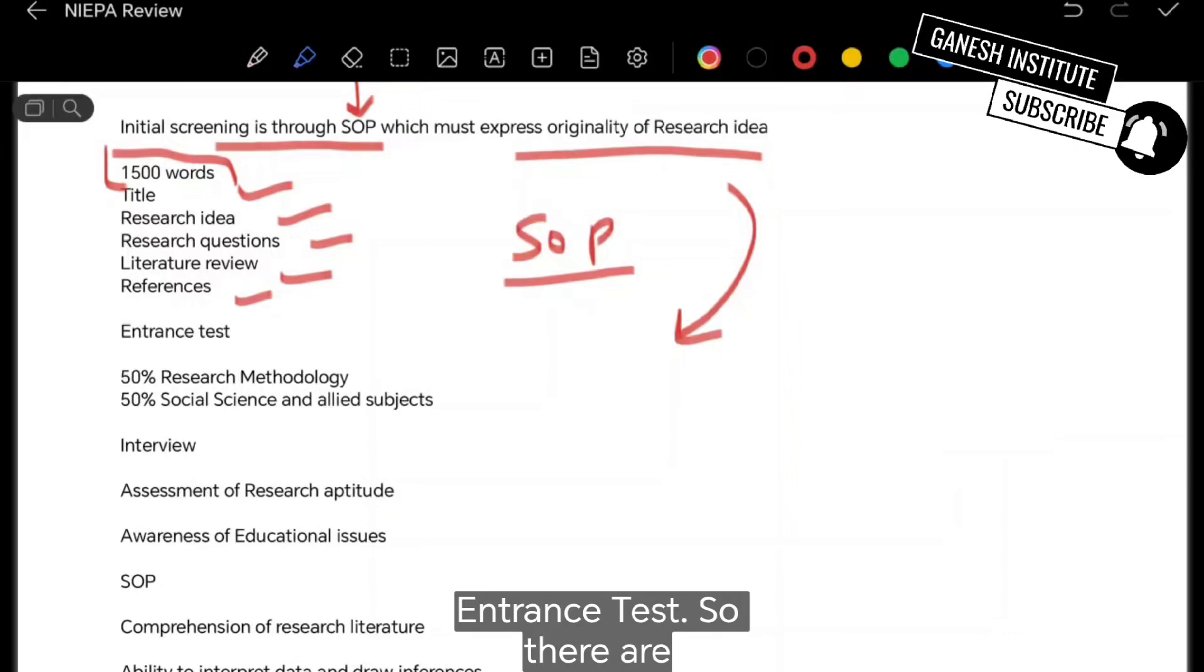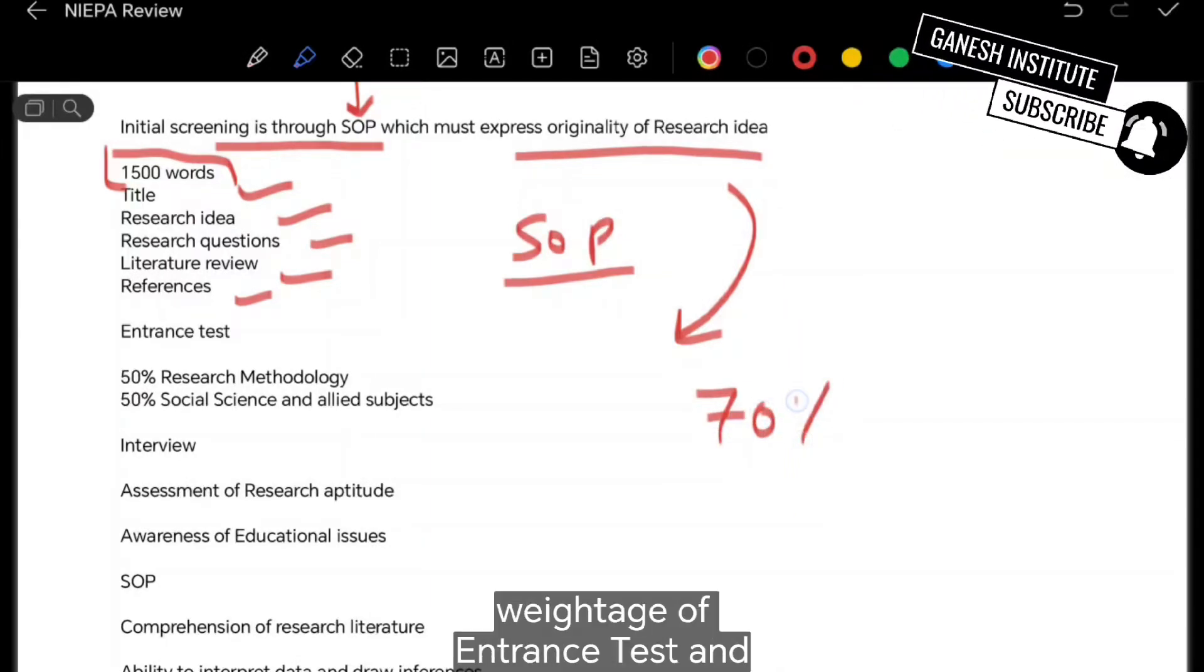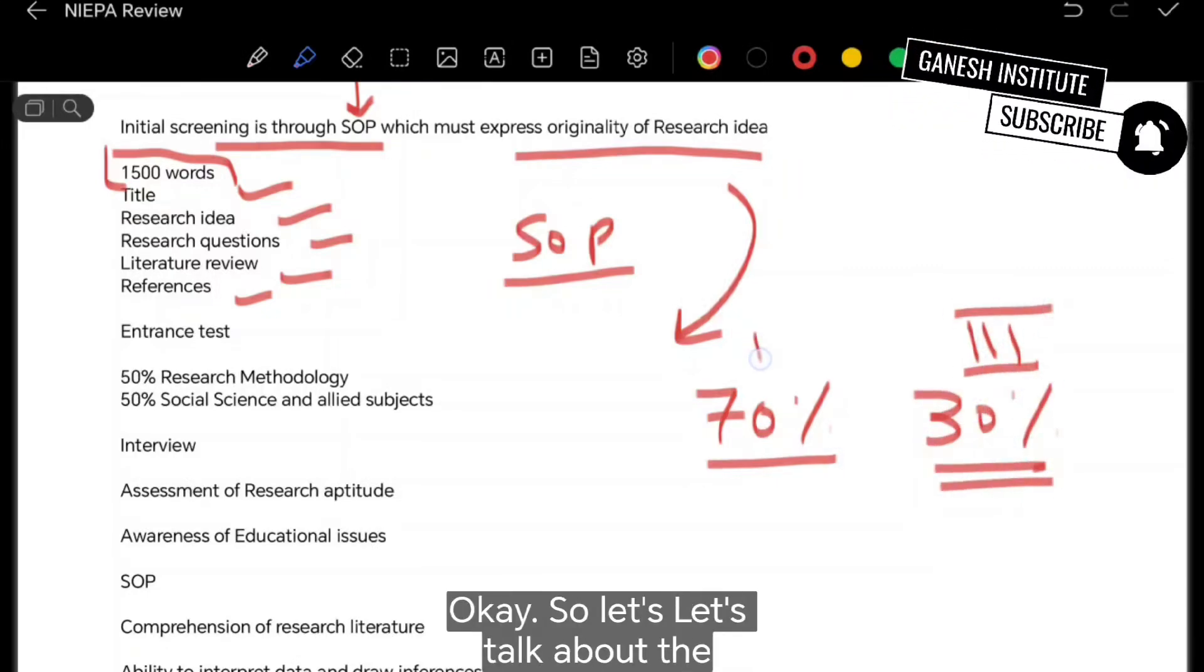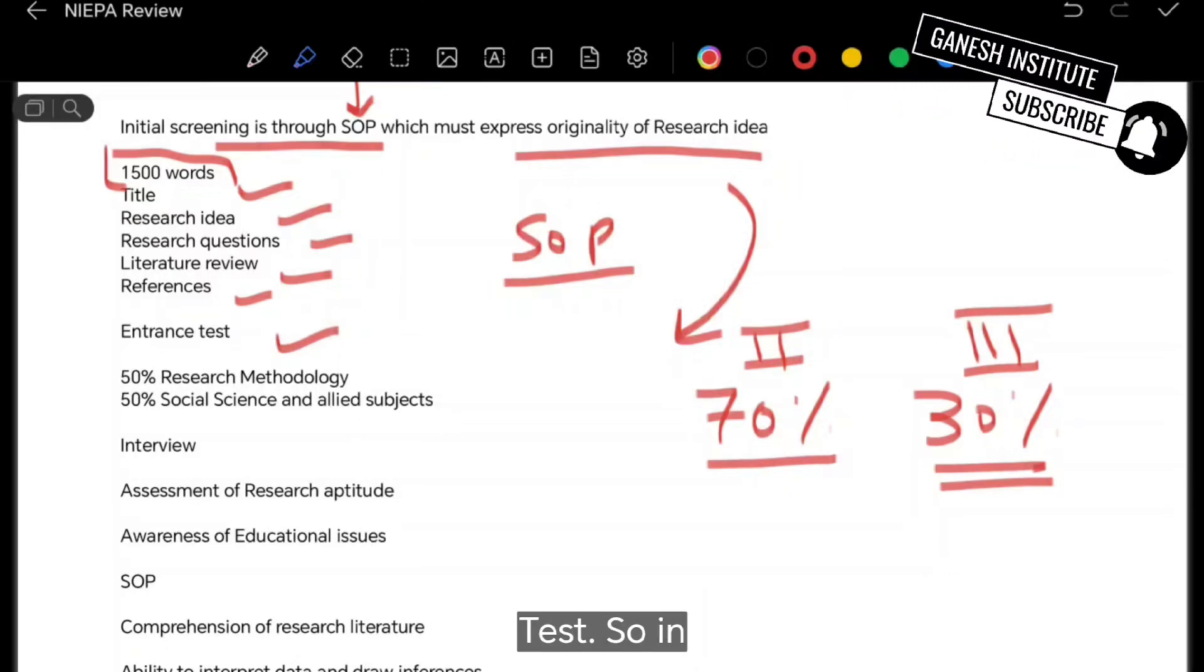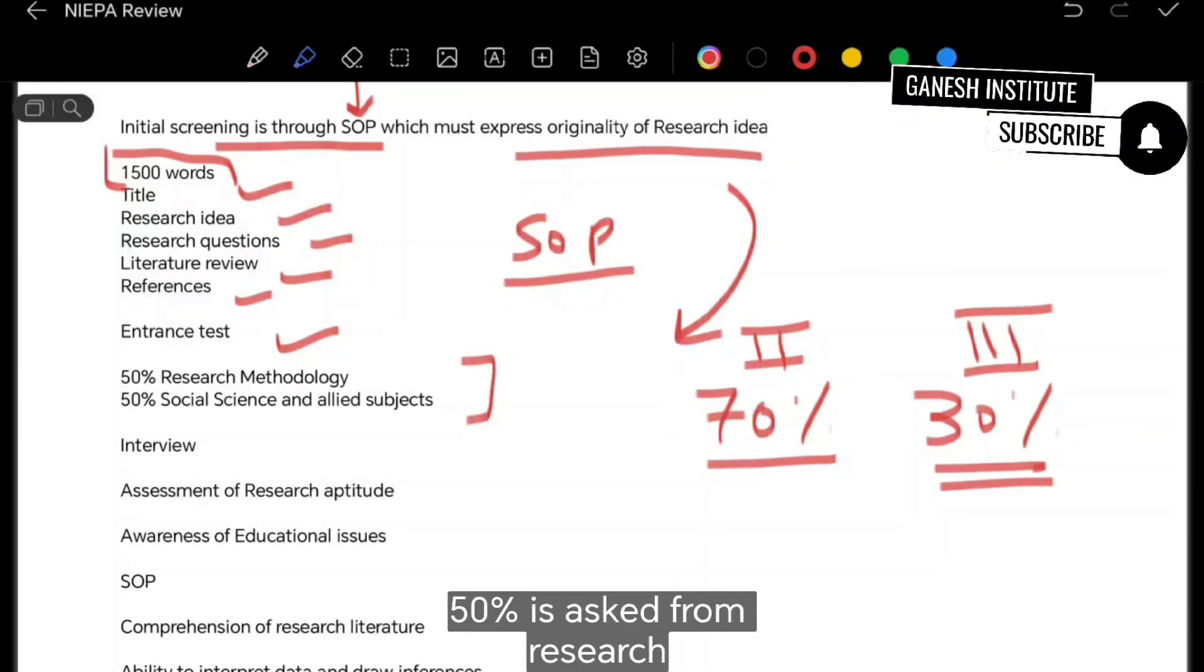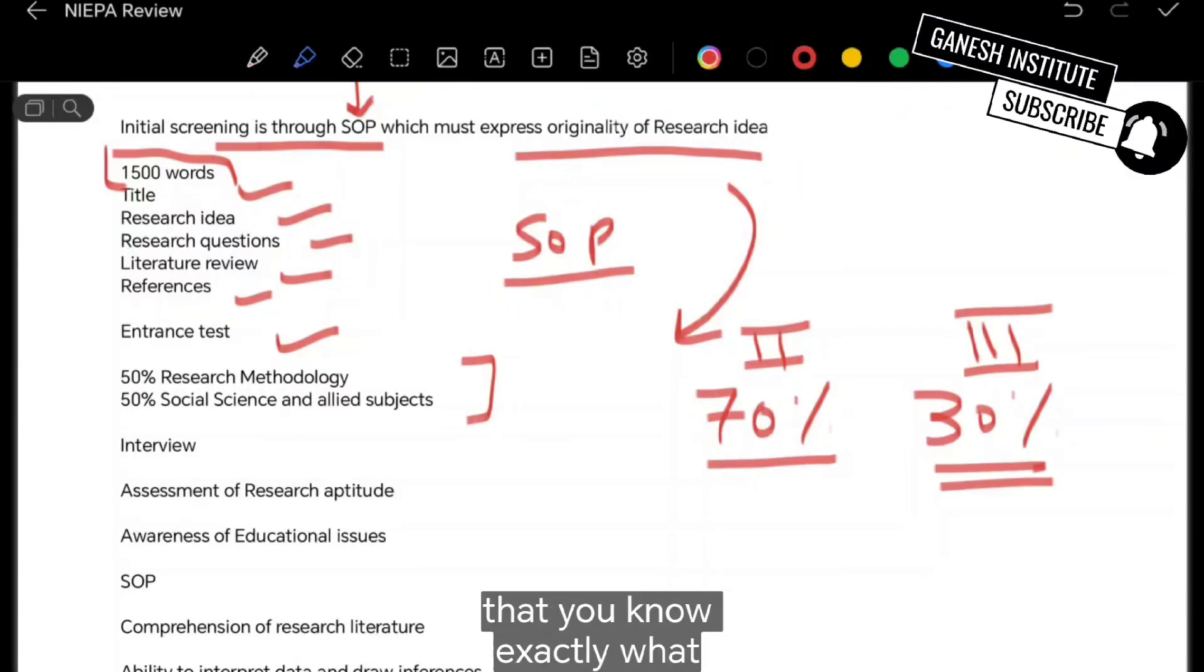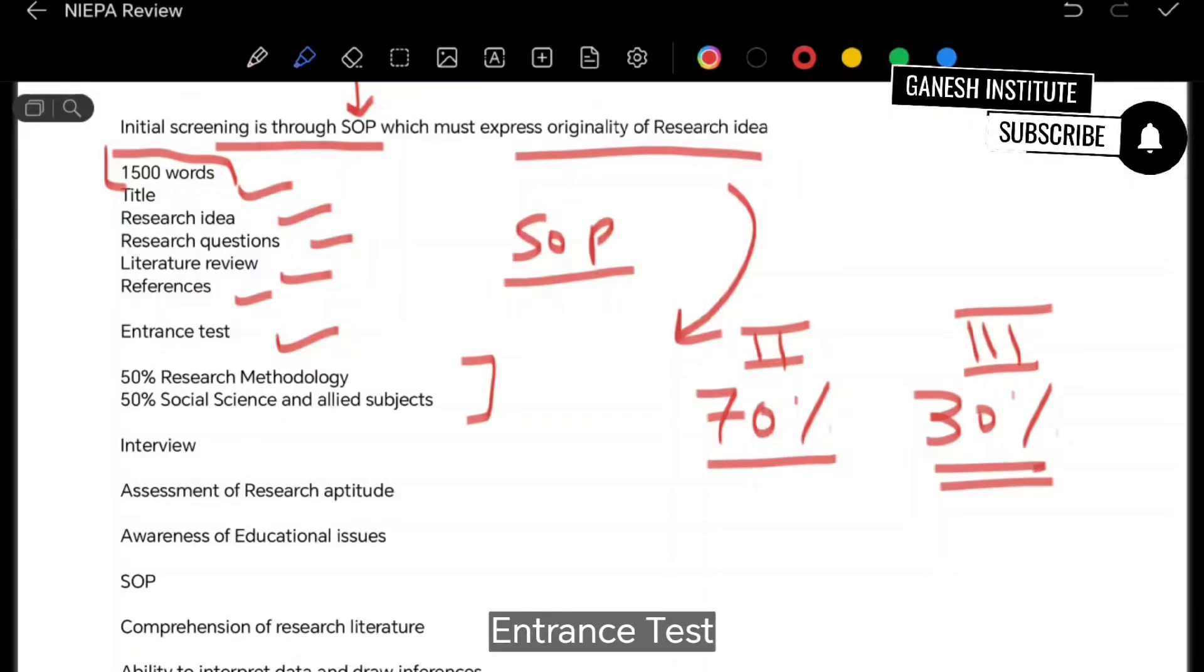So that is entrance test. So there are two things: 70% is the weightage of entrance test, and 30% is the weightage of interview, which is the third phase. So let's talk about the second phase, which is entrance test. In the prospectus itself, it is written that 50% is asked from research methodology, and 50% from social science and allied subjects.